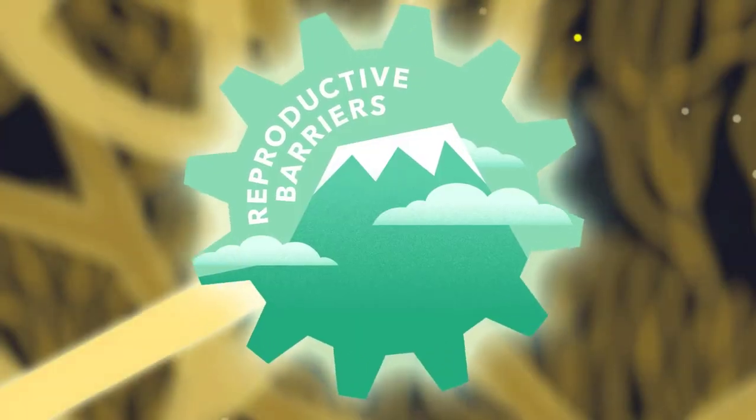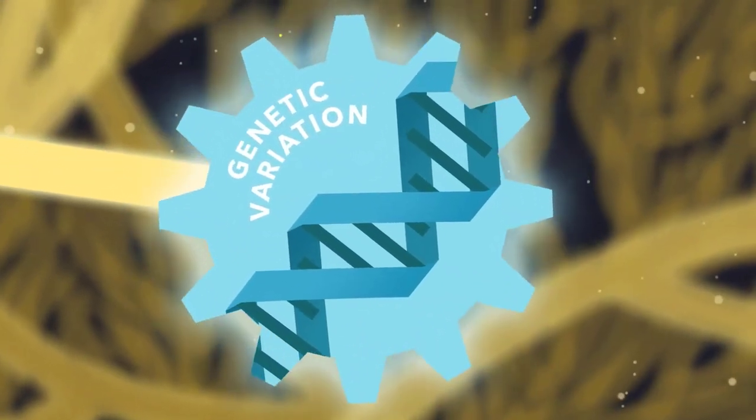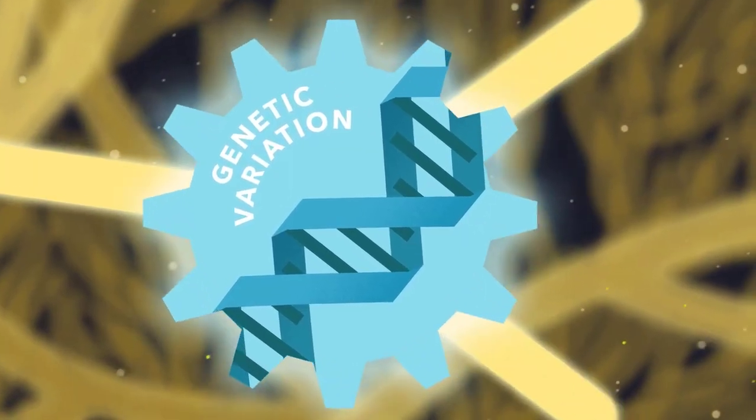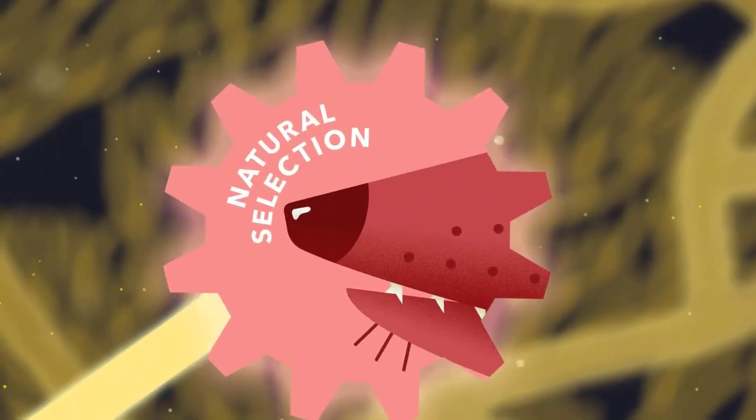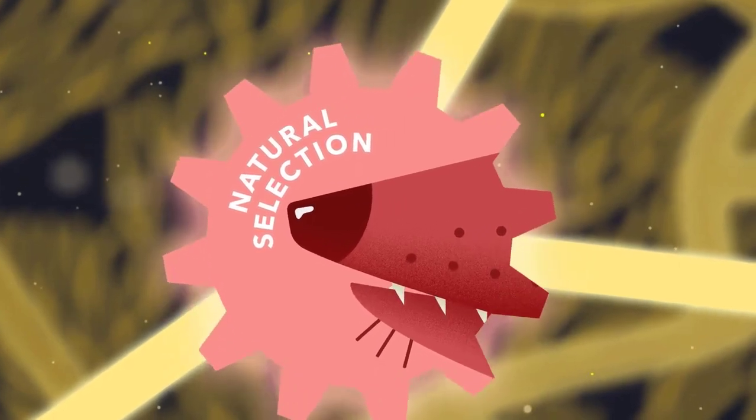Reproductive barriers cause lineages to branch. Mutation and allele shuffling generate variation within each branch. And natural selection causes those branches to diverge as each population adapts to different surroundings.